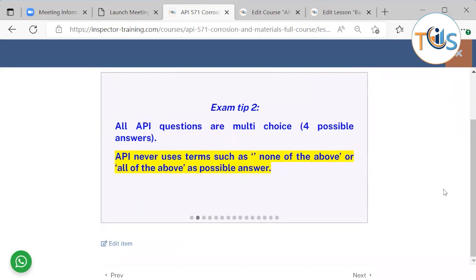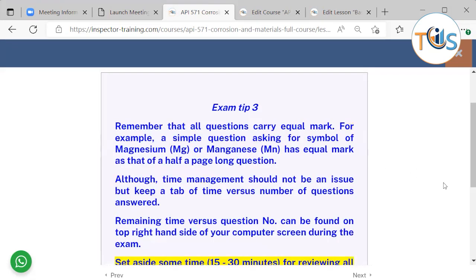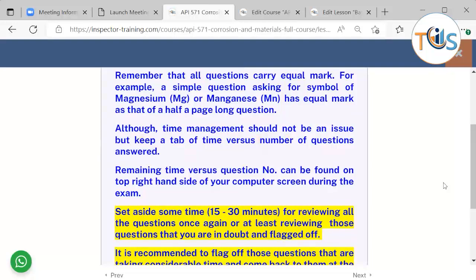All API questions are multi-choice with four possible answers. API never uses terms such as 'none of the above' or 'all of the above' as possible answers. Remember that all questions carry equal marks. For example, a simple question asking for the symbol of magnesium or manganese has equal marks as that of a half-page long question. Although time management should not be an issue, use your time wisely and keep a tab of time versus number of questions answered.